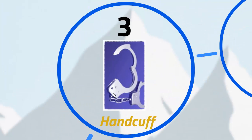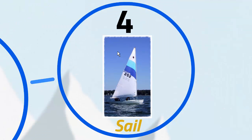3 looks like a handcuff — an opened handcuff. 4 looks like a sail, the sail of a boat. You can watch the cursor and see the shape of 4 inside the sail of the boat, and this is the association. So 4 looks like the sail of a boat.